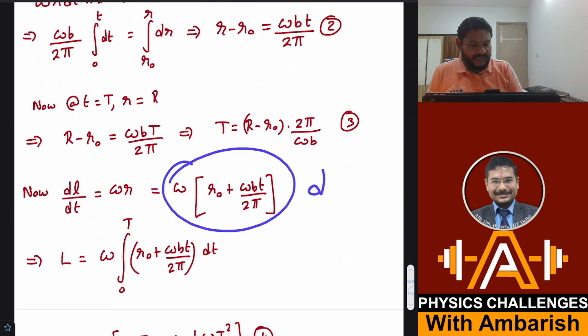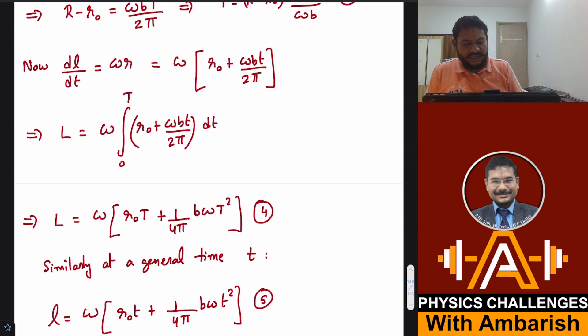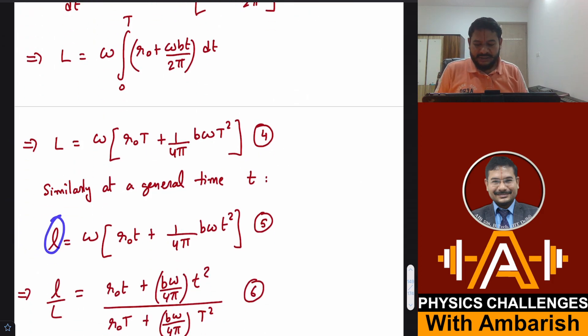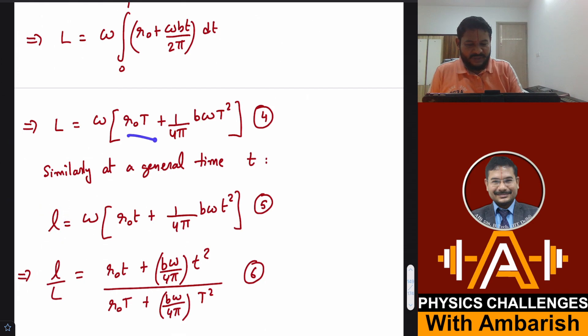Multiply this whole thing by dt and integrate it from 0 to capital T. That should be equal to capital L. If you do that integration, L is omega into r0 capital T plus 1 by 4π b omega capital T square. Similarly, instead of finding the length wound till total time, I could have also integrated it till small t to find the length wound till a general time t. So small l is just the same expression, capital T is substituted by small t. This is the length wound at a general time t.